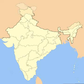Bombay state was enlarged by the addition of Saurashtra state and Kutch state, the Marathi-speaking districts of Nagpur division of Madhya Pradesh, and the Marathwada region of Hyderabad state. Rajasthan and Punjab gained territories from Ajmer and Patiala and East Punjab States Union respectively, and certain territories of Bihar were transferred to West Bengal.